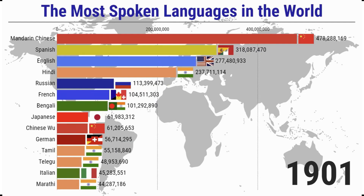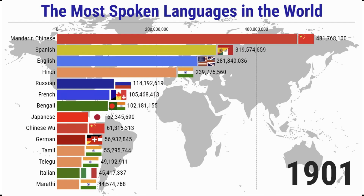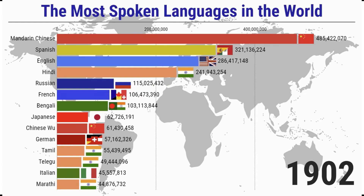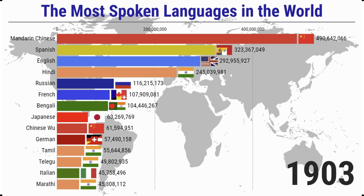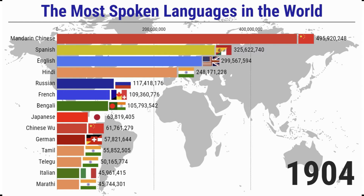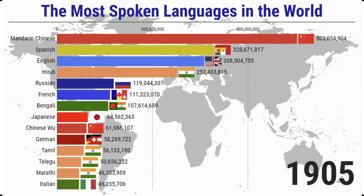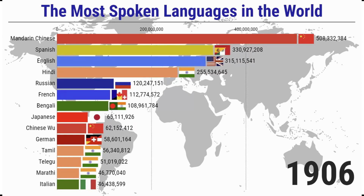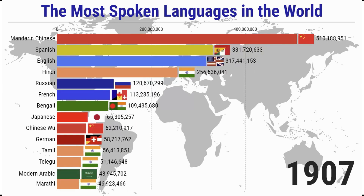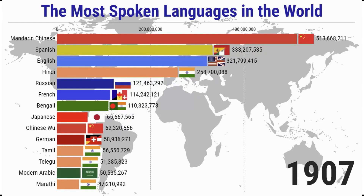The most widely used language ranking of the world's native language population: native speakers of Hindi rank first with approximately 1.6 billion people, Chinese ranks second with approximately 1.5 billion people, and English ranks third with approximately 400 million people.